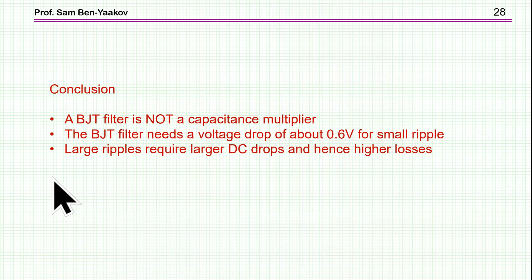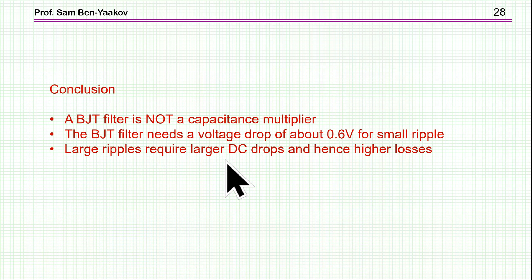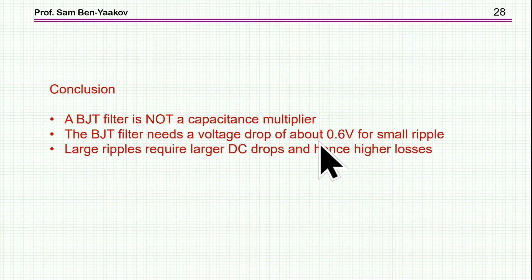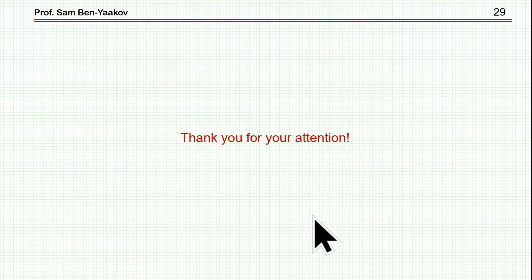In conclusion: the BJT filter is not a capacitance multiplier. There are some aspects of capacitance multiplication if you look from the output into the input, but that has nothing to do with the function of the filter. The BJT filter needs a voltage drop of about 0.6 V for small ripple to stay in the linear mode, and for large ripple it requires a larger DC drop and hence higher losses. Thank you very much for your attention — I hope you found it of interest and useful.